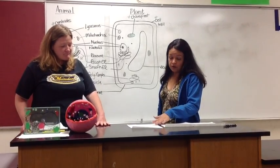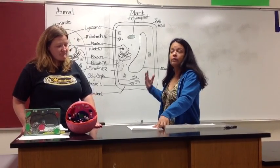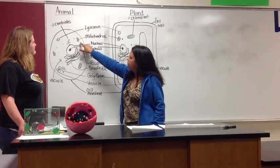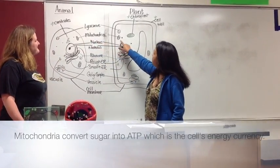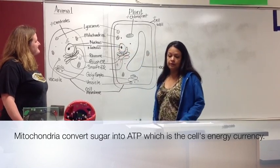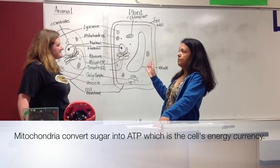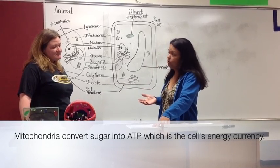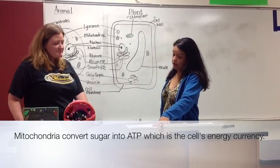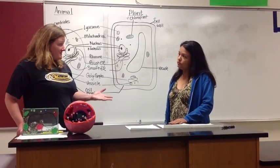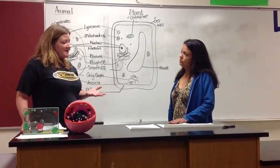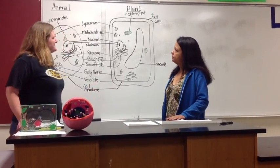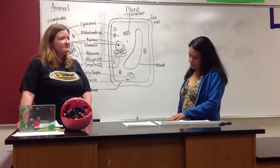Next we have the mitochondria — mitochondrion is singular, mitochondria is plural. They look like little hot dogs with mustard on them and can be found in all eukaryotic cells. This organelle is super important because it converts sugar into ATP, or energy. So they're kind of like the power plants of the cell.